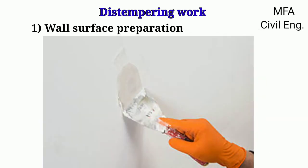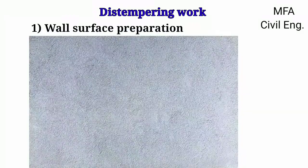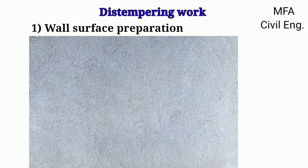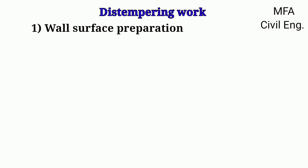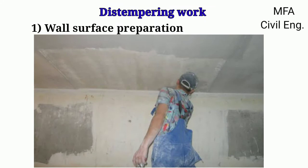Cracks and holes seen on the wall surface should be filled with putty. Note that a new wall surface to be distempered should be kept exposed for three to six months for proper evaporation of all moisture. For old surfaces, the old distemper should be removed by scraping before applying the new distemper.